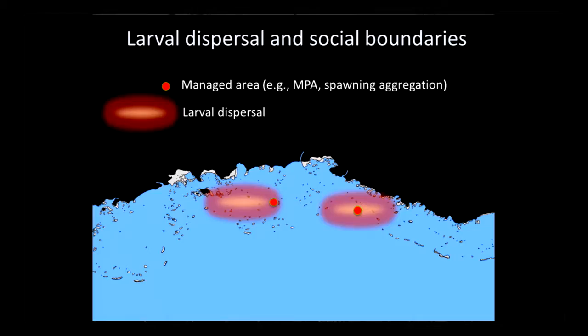It's actually been a really powerful element of change in that system. What I'd like to talk about is just briefly this problem of spatial scale and larval dispersal. So imagine, if you will, that you've got these two managed areas, maybe an MPA or a protected spawning aggregation, and that red cloud that goes away from that managed area is the cloud of larvae moving away from that protected site.